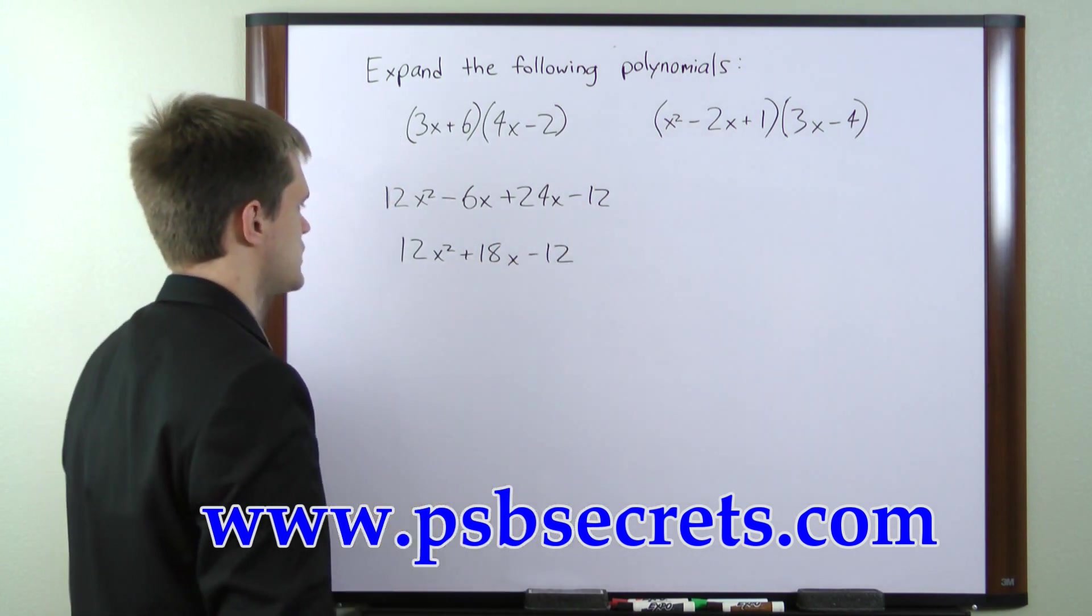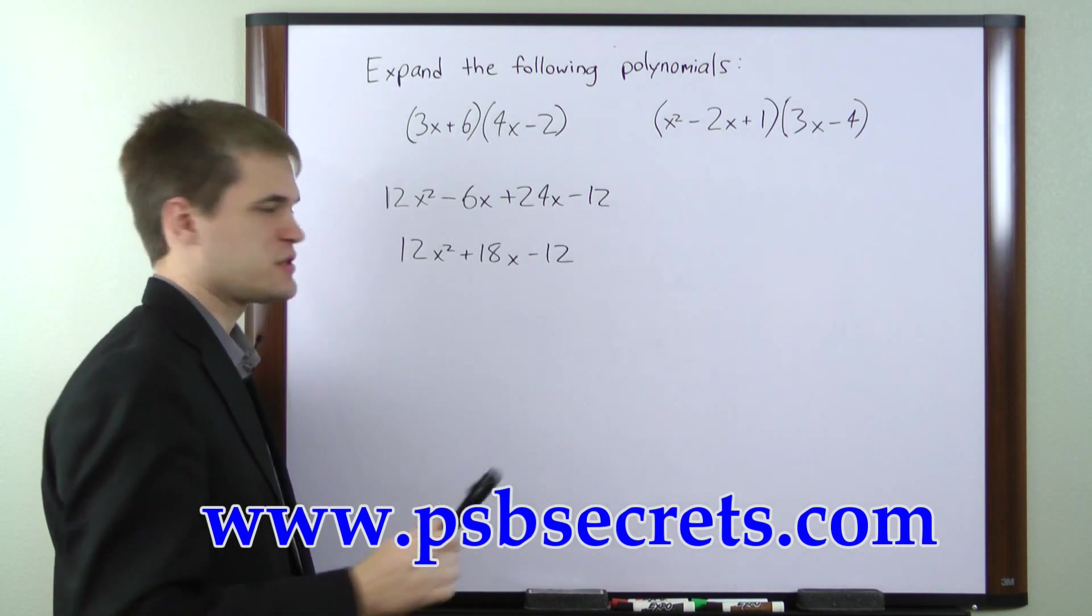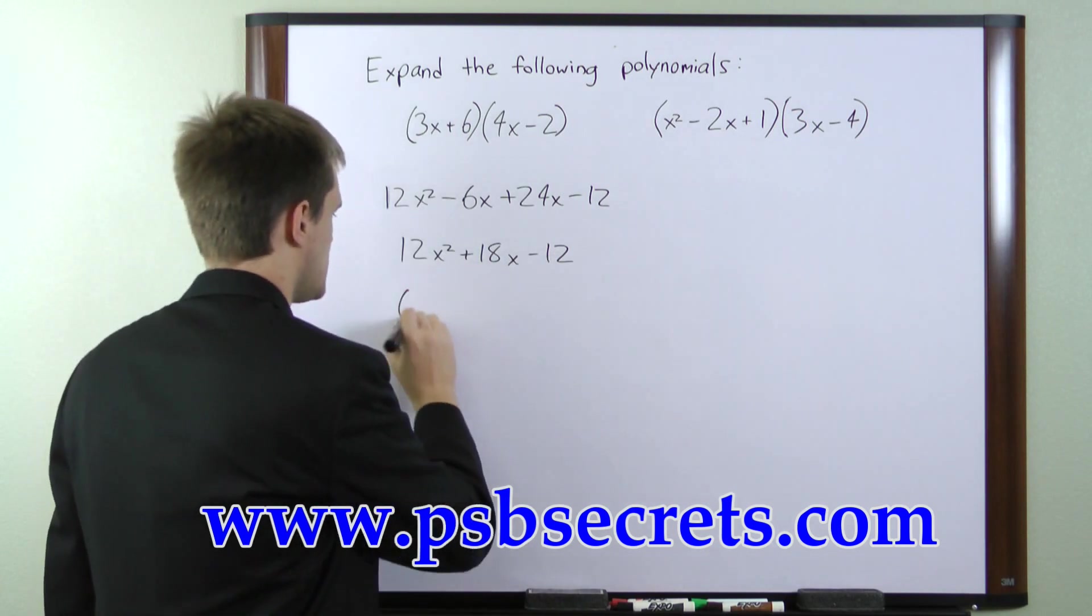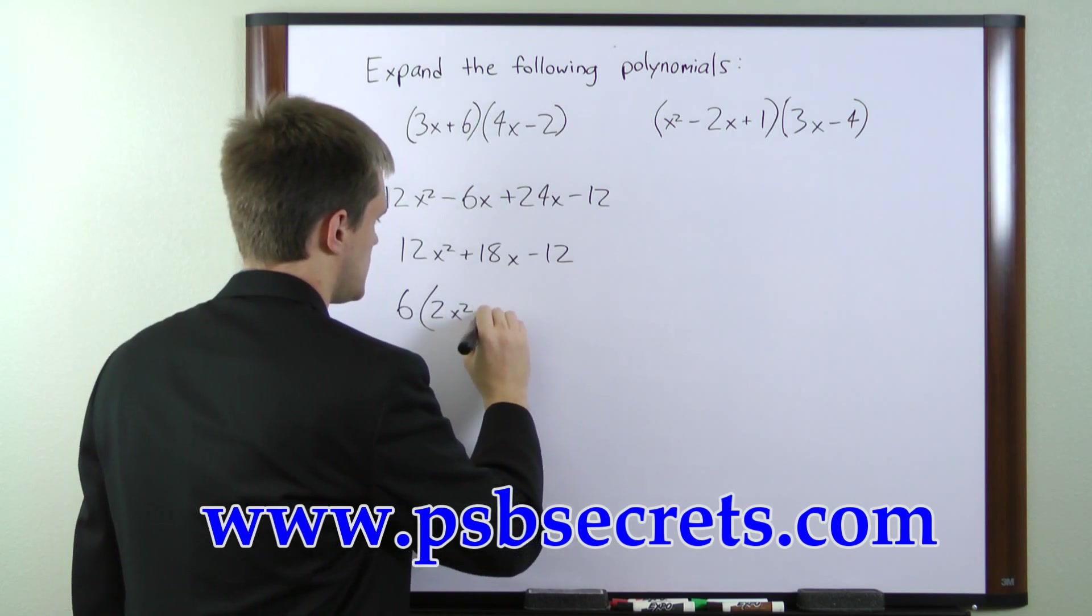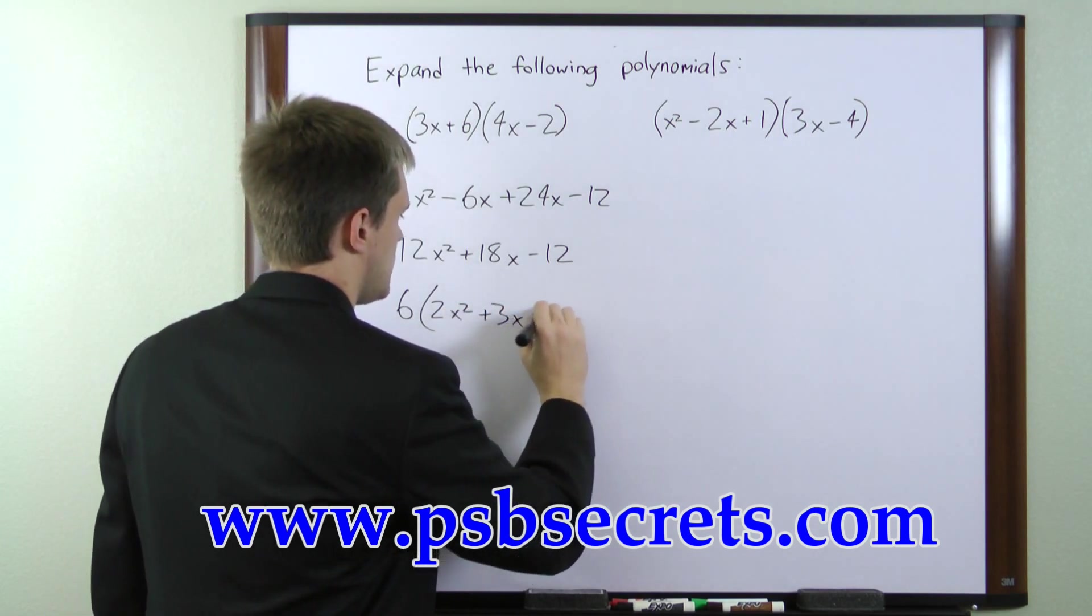Now each of these numbers is a multiple of 6, so we can pull a 6 outside of this expression. And that gives us 2x squared plus 3x minus 2.